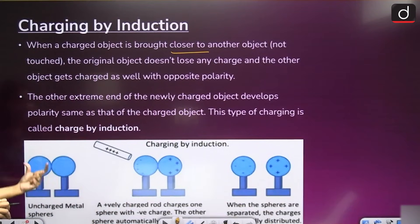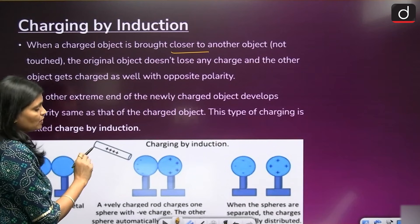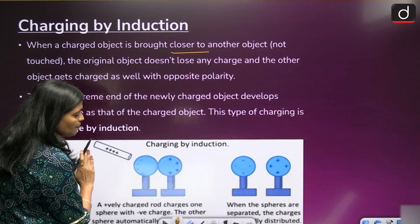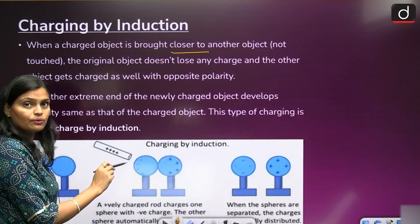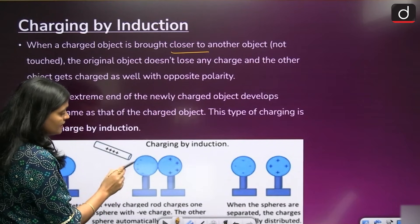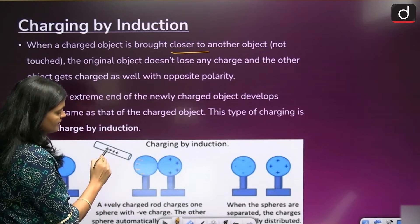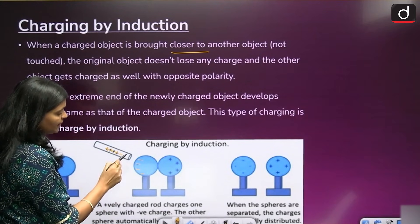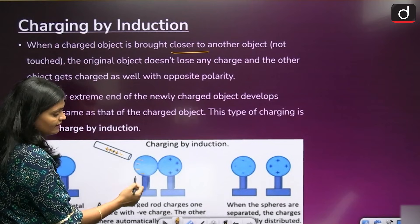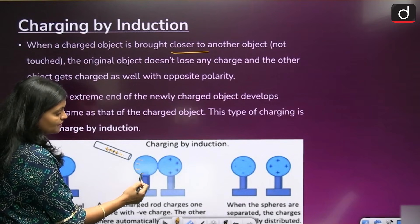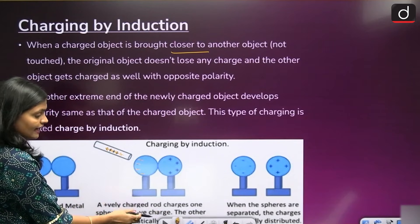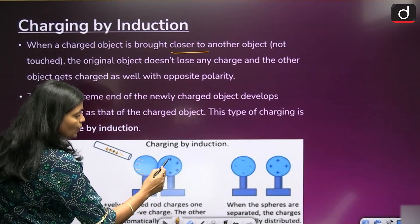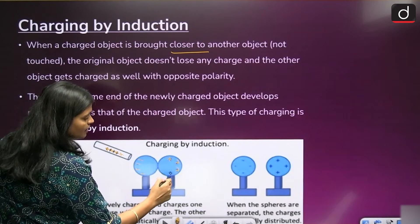This is the two uncharged metal spheres. Here a positively charged metal rod you just bring near to the metallic sphere. You are not touching with them. Then what happens? See here, here you will get opposite polarity. This is positively charged, and it induces negatively charged, negative charges are induced.